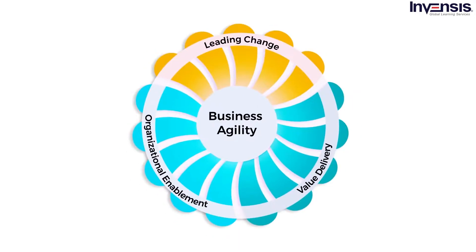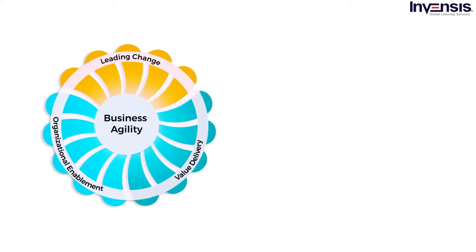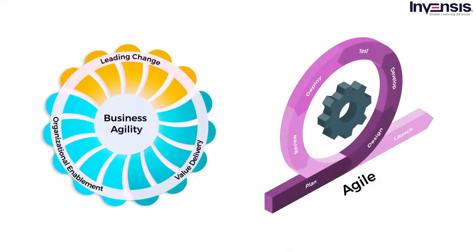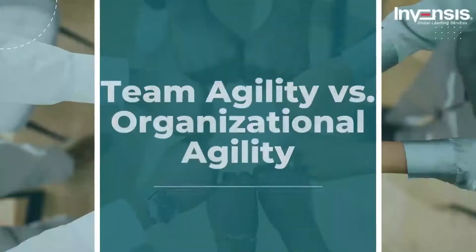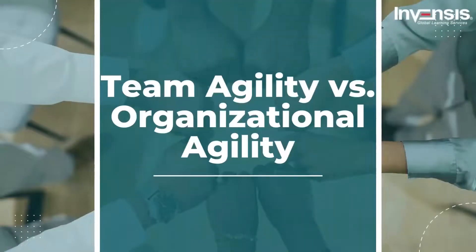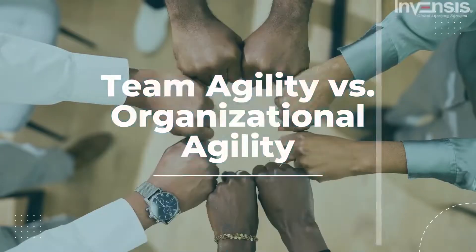Examining business agility models leads to the same conclusion. Within the context of these models, agile is limited to individual teams and is insufficient. So, in this video, we are going to talk about team agility versus organizational agility in detail.